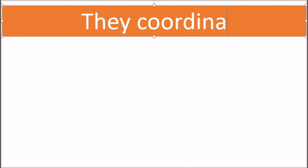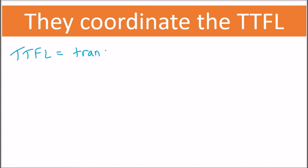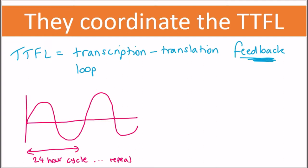The core circadian clock factors act to coordinate the TTFL. TTFL is the transcription translation feedback loop, and this is the loop that regulates the 24-hour cycle in the circadian rhythm.